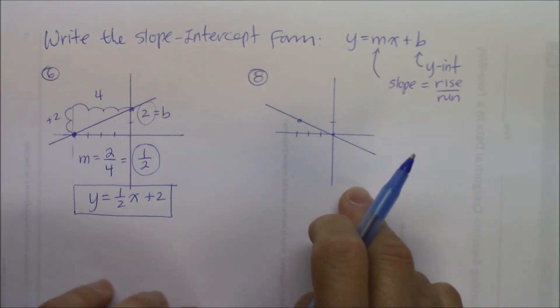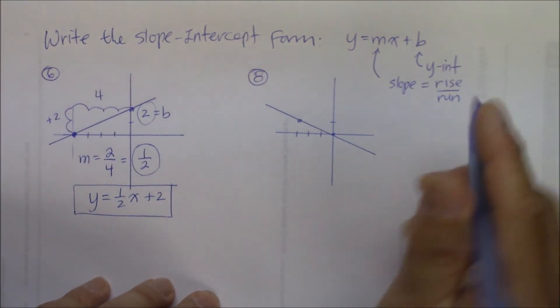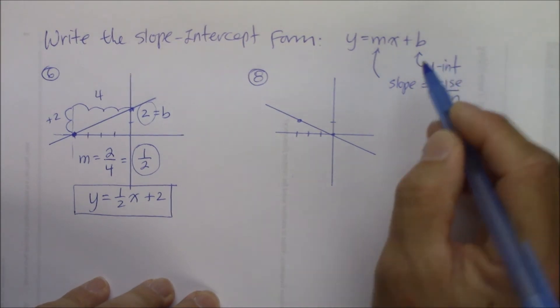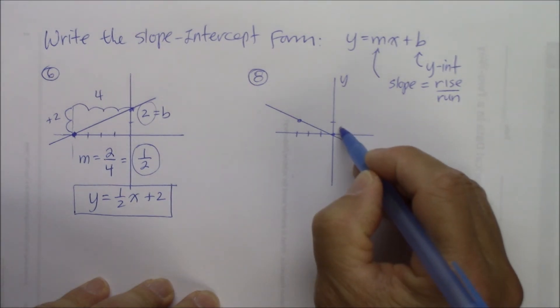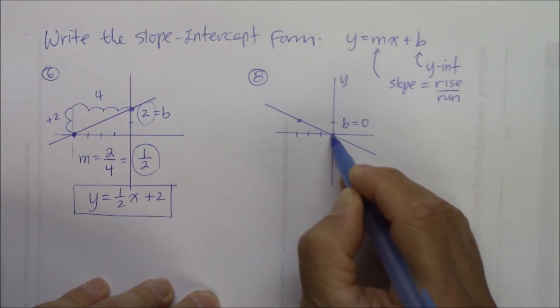Now this one, same thing as before. What is the y-intercept? The y-intercept on this y-axis, where is this line going through? At the zero. So the y-intercept is zero, because that's through the origin.